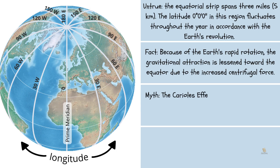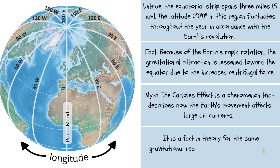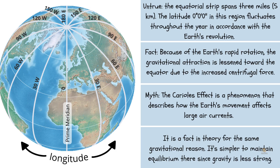Myth: the Coriolis effect is a phenomenon that describes how the Earth's movement affects large air currents. It is a fact in theory for the same gravitational reason. It's simpler to maintain equilibrium there since gravity is less strong.